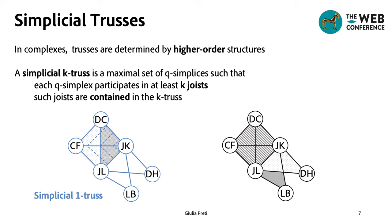As an example, given the complex on the right, we can find the simplicial one-truss on the left, which consists in the set of four triangles that together form the joists of the tetrahedron and the set of four edges at the bottom, which form the joists of the two triangles in the complex.